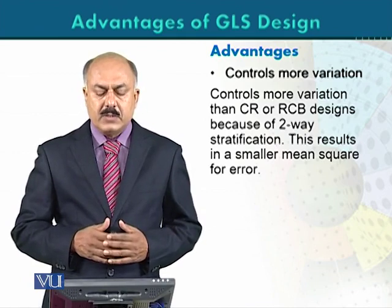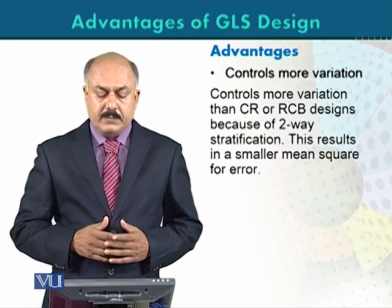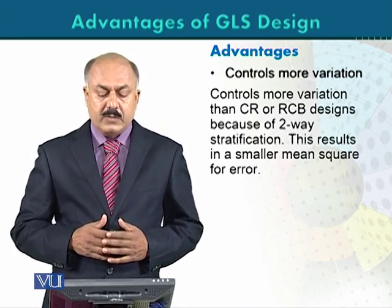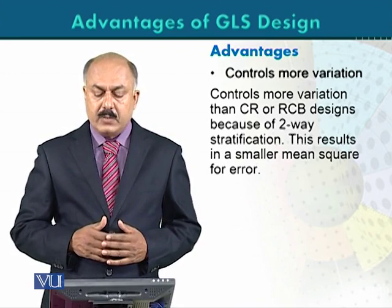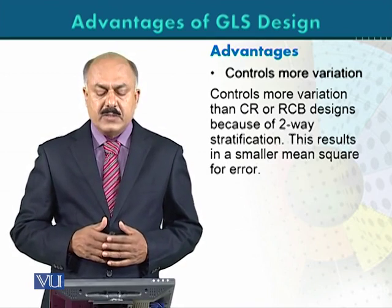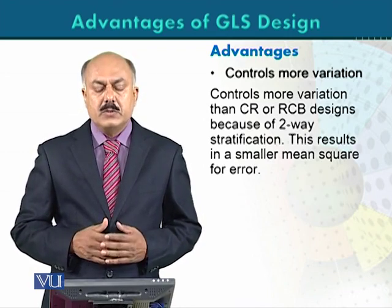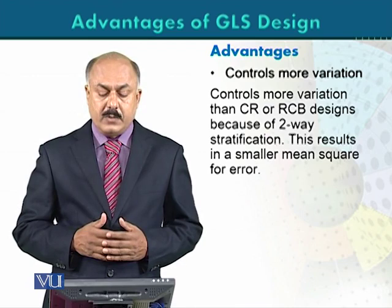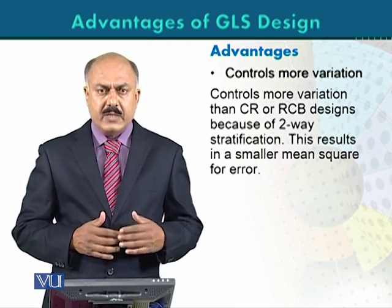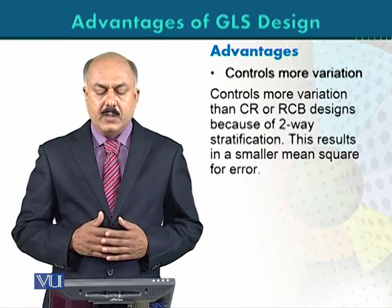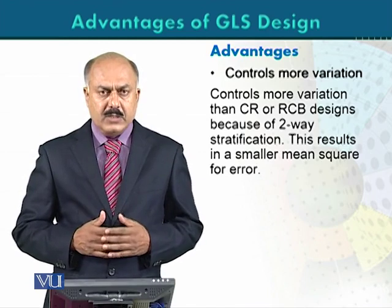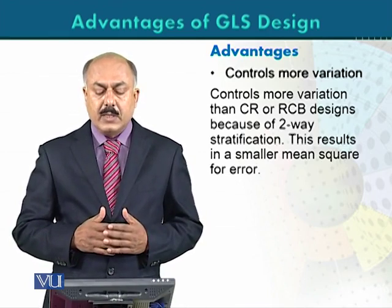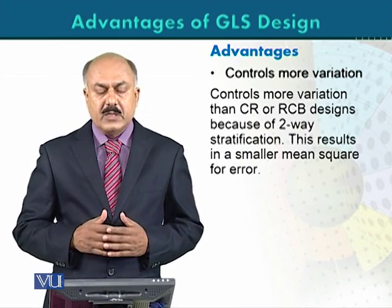Now we consider the advantages one by one. The first advantage is that it controls more variation. This design controls more variation than CR or RCBD, because of two-way stratification, which results in a smaller mean square error. In a completely randomised design, there is no blocking, so if experimental units vary, the mean square error will increase. If one type of blocking is not enough, then we need more grouping — we need to go to Latin square or Greco-Latin square. Because Greco-Latin square controls more sources of variation, it is better than other block designs in some situations.